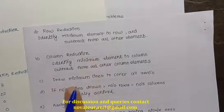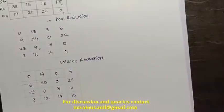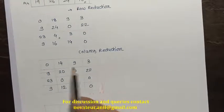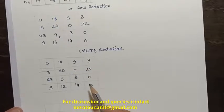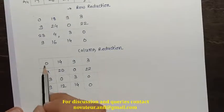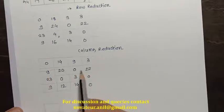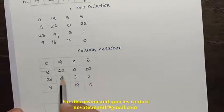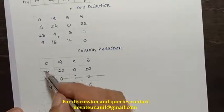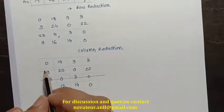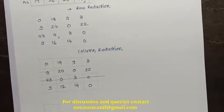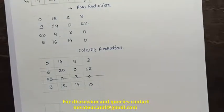With row and column reduction done, the next step is to draw the minimum number of straight lines to cover all zeros. We go row-wise first: if a single line covers one zero in a row, we draw it. A line covering two zeros is preferred. We then check column-wise for any remaining zeros. The goal is to cover all zeros using the fewest possible lines. In a 5×5 matrix, there could be three zeros in a row or four in a column, so we choose accordingly.